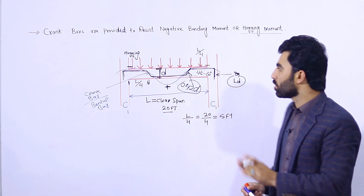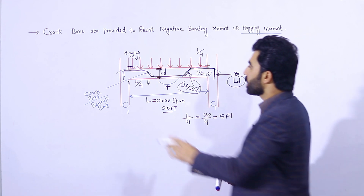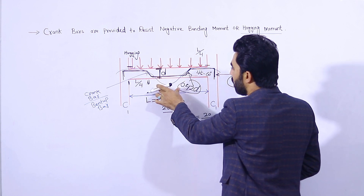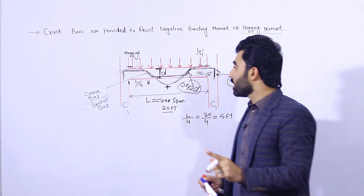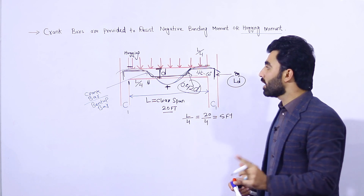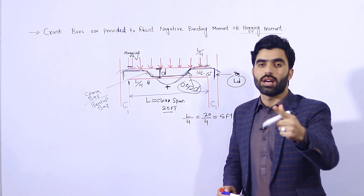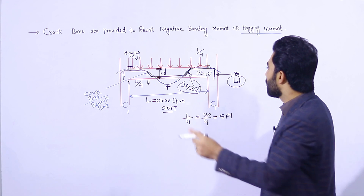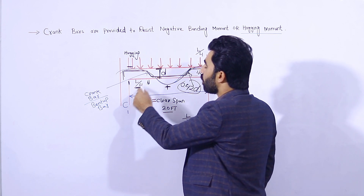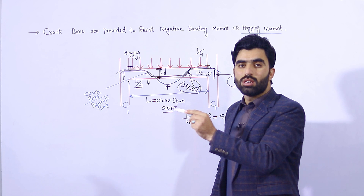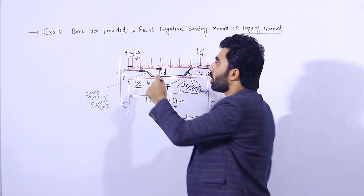It is very important to provide the crank bar to resist negative bending moment when the load is applied on the top of this beam. It creates positive bending moment and negative bending moment. Remember, if you are not able to provide a crank bar, we provide extra steel rods at the top — I will discuss that in the next video. The crank bar should be provided to a distance of L/4. Also, you are not allowed to provide a lapping length at this place, because we have hogging negative bending moment there.